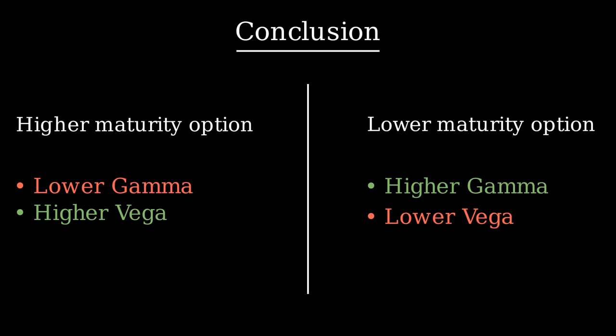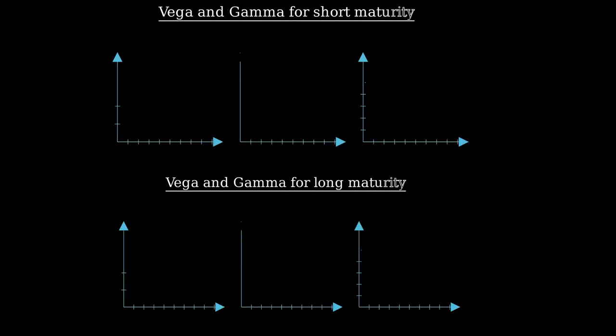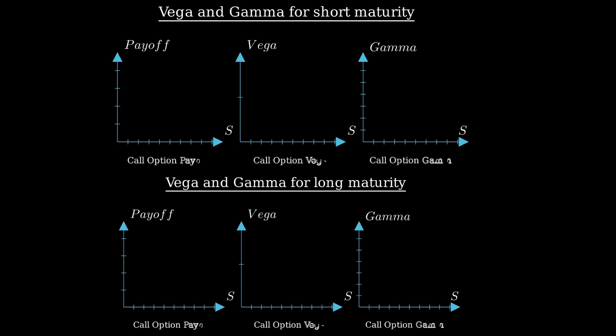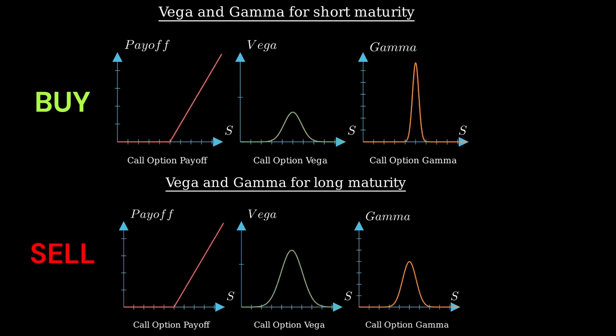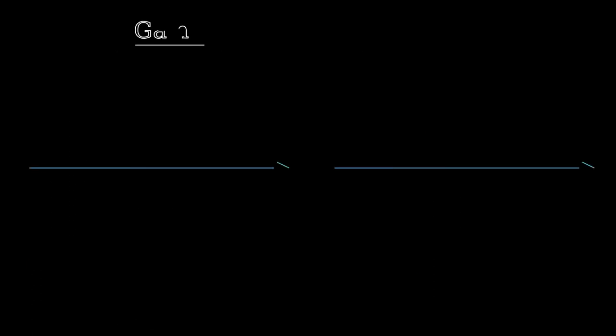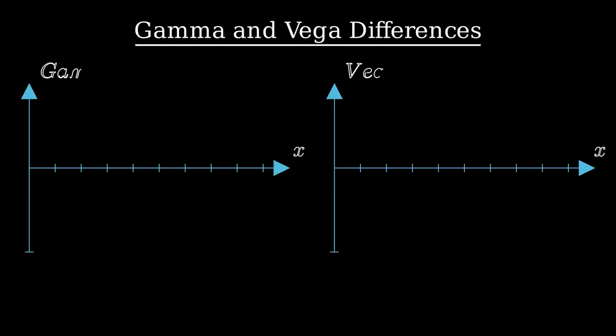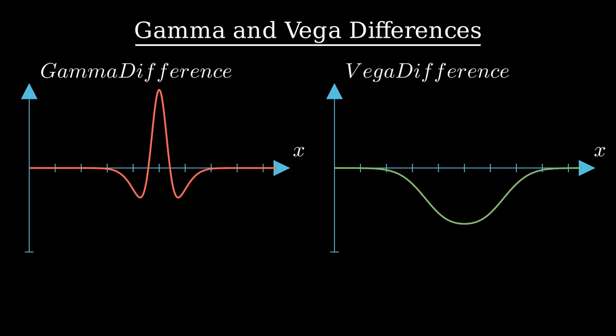Therefore, to create our position of long gamma and short vega, we can use a time spread between two options. To be long gamma and short vega, you have to buy an option with a short time to maturity, which will therefore have a high gamma, and sell an option with the same strike price, but a longer maturity, which will therefore have a negative vega. By comparing the gamma and vega amplitudes, we can see that gamma 1 minus gamma 2 is positive around the strike price and that vega 1 minus vega 2 is negative. We therefore end up with a strategy where gamma is positive and vega negative.